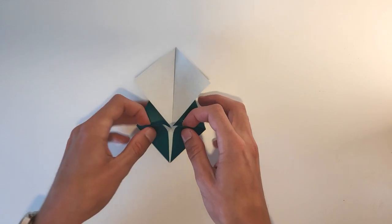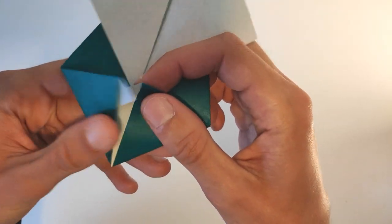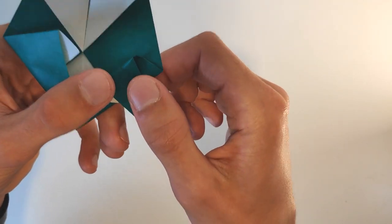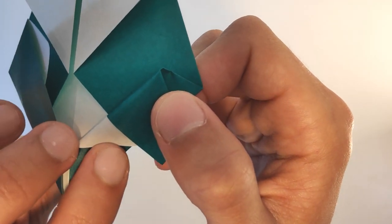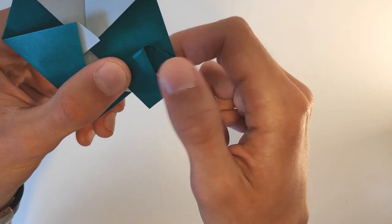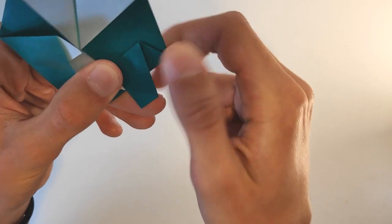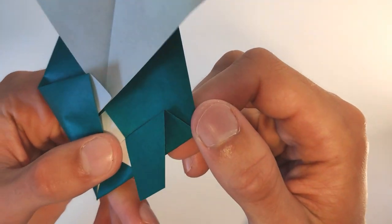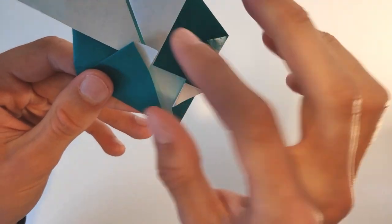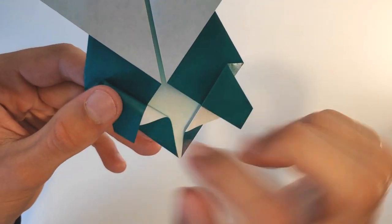Now grab one flap. And we want to fold these down so that this point aligns with this edge. Like this. And these will form the feet of the turtle. And do the same thing on the left side.